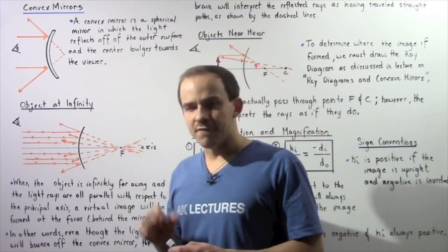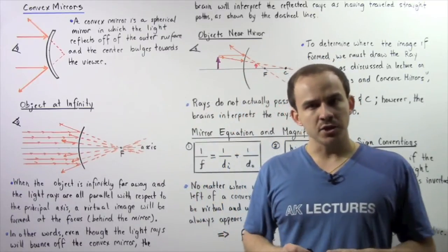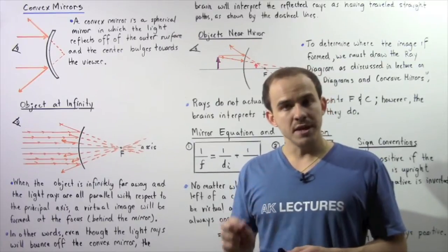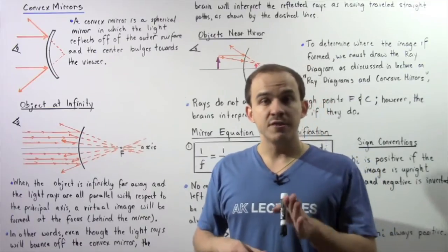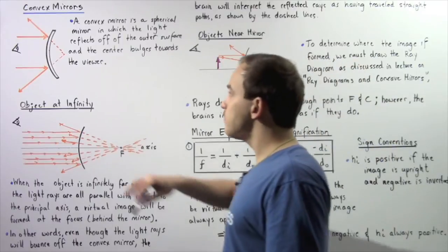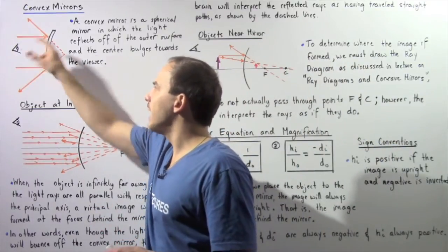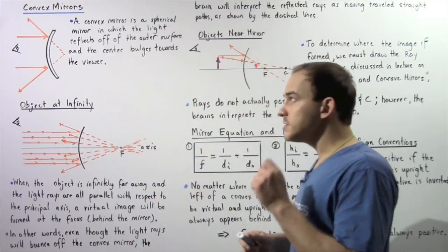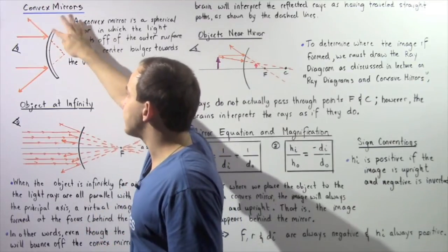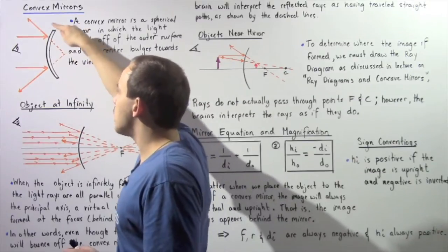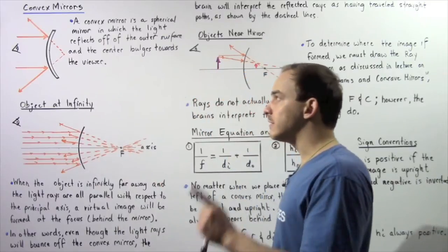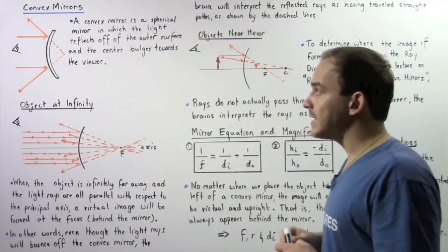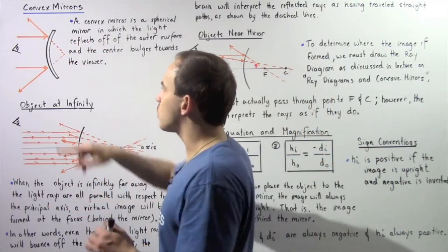A convex mirror is one type of spherical mirror in which the rays of light are reflected off of the outer surface of the mirror, and the center of the mirror bulges or bends towards the viewer. This can be seen in the following diagram. What makes this mirror a convex mirror is two things: first, rays of light reflect off the outer surface, meaning the metallic reflective coating is on the outer surface, not the inner surface. Second, the center bulges toward the viewer.